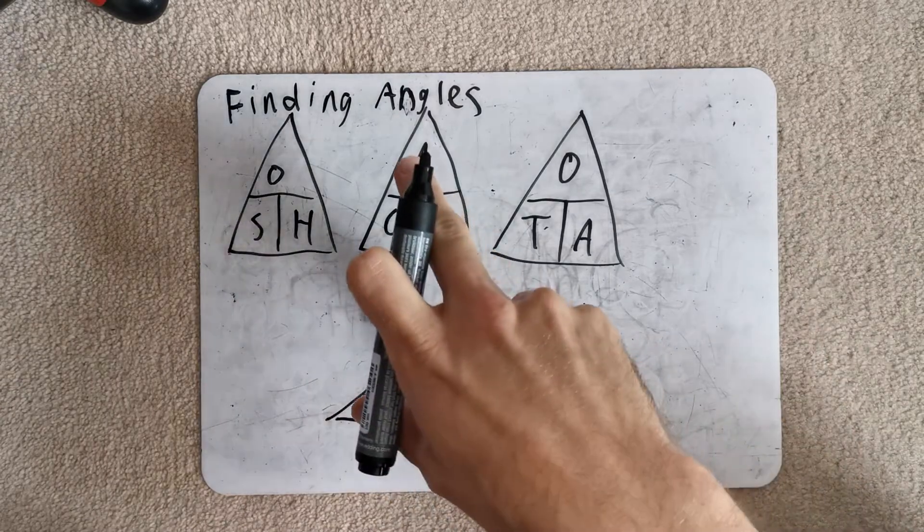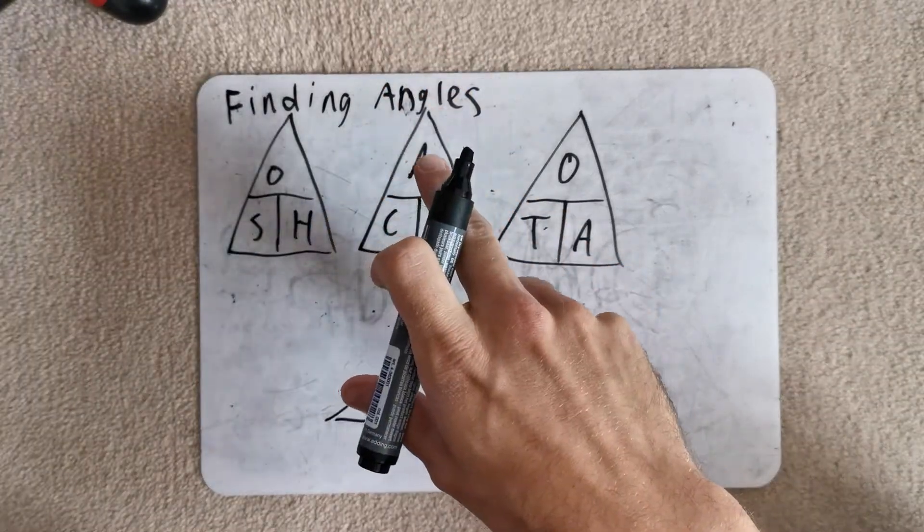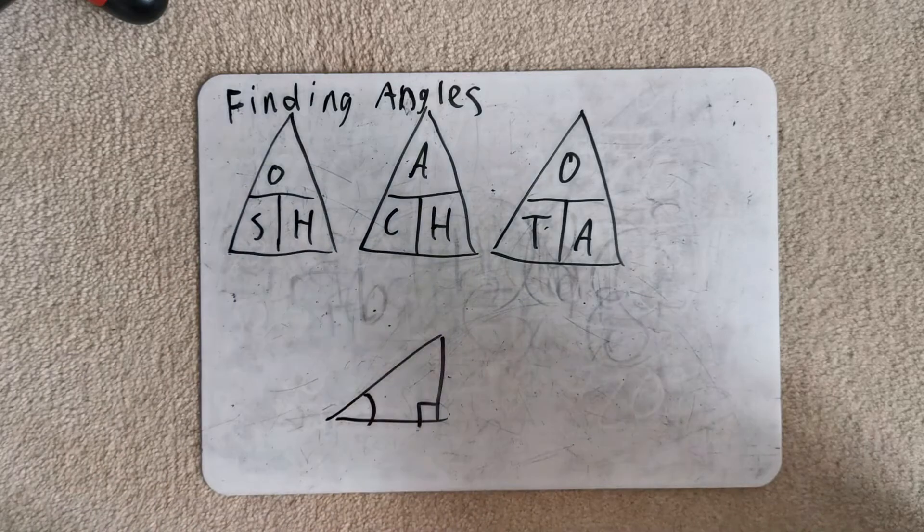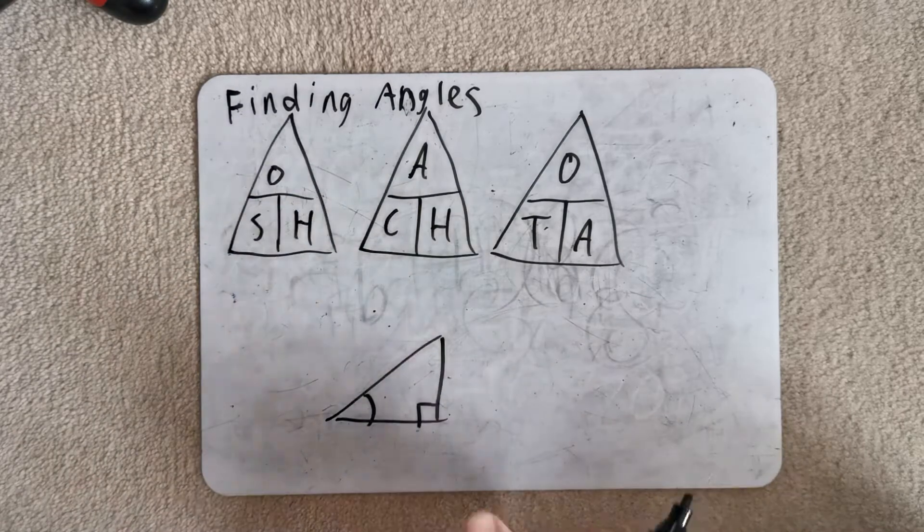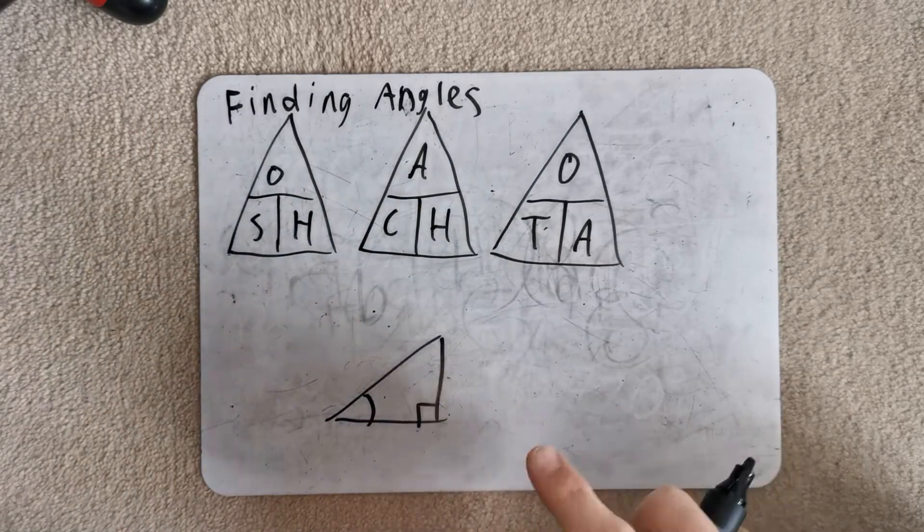This time we're going to go the opposite way and we're going to be finding angles if we're given two of the sides. Just a quick recap though, because this is important knowledge.